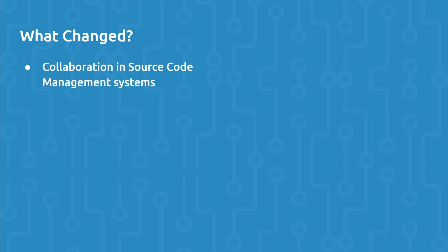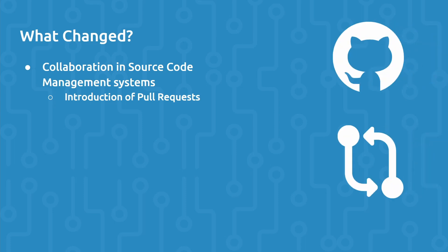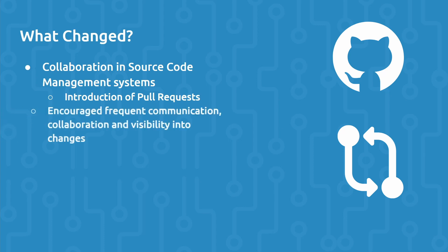The next technical improvement is collaboration in source code management systems. Specifically, GitHub introduced pull requests that provided a vehicle through which changes could be reviewed, discussed, approved, or rejected. Pull requests encouraged frequent communication, collaboration, and visibility into changes.